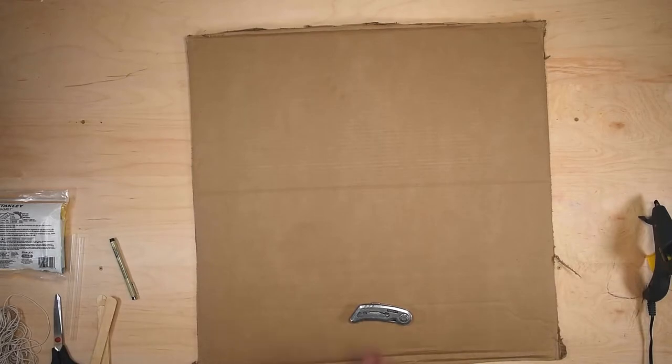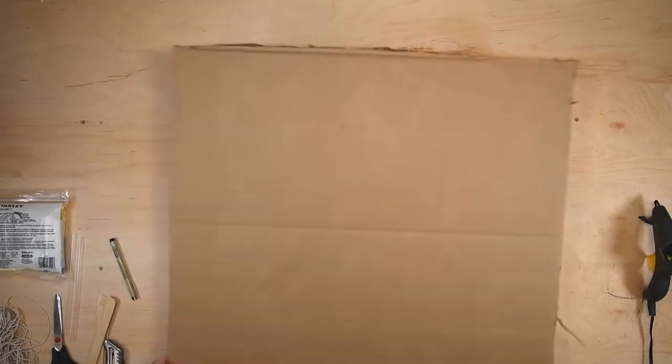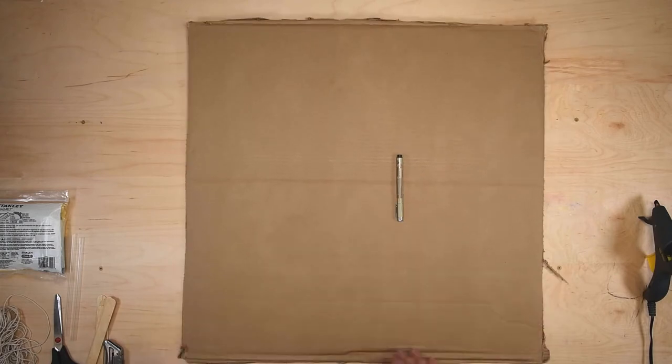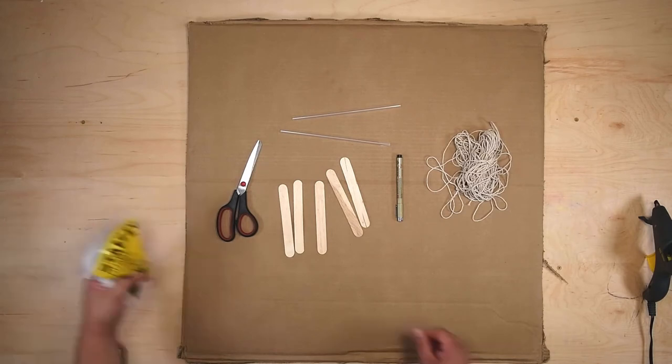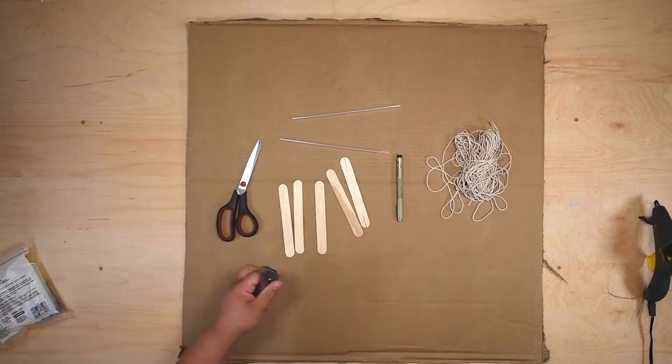The things you need to make your space gauntlet are some cardboard, something to write with, a lot of popsicle sticks or tongue depressors, strings, straws, scissors, something to cut cardboard with, and a lot of hot glue.